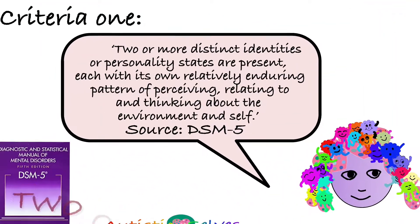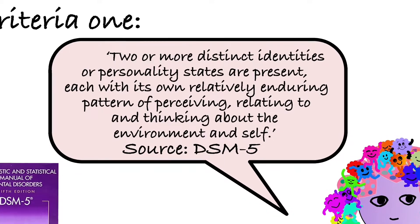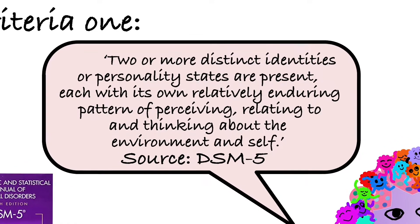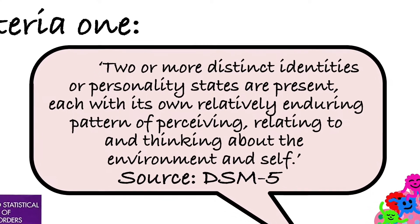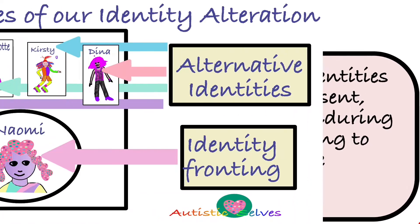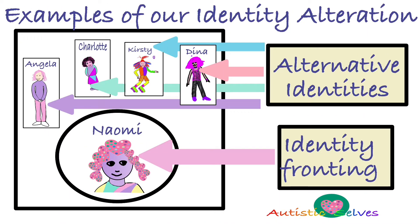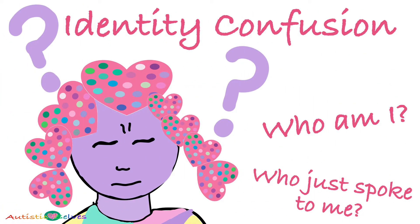The first criteria for DID is that there should be two or more distinct identities or personality states present, each with their own relatively enduring pattern of perceiving, relating to, and thinking about the environment and self. We feel we are made up of several different identities or parts, with each one taking over at different times. We also experience identity confusion — we are often confused about who we are and are aware of other identities within us but don't always know exactly who they are.